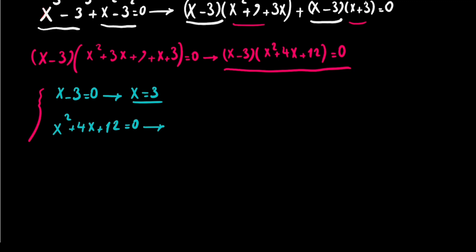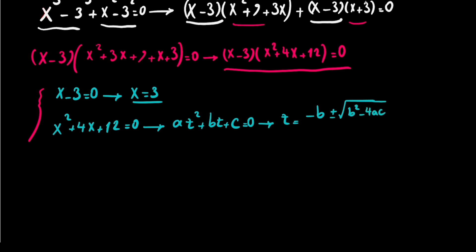To solve the quadratic x squared plus 4x plus 12 equals 0, I'll use the quadratic formula. As I showed in a previous video, for at squared plus bt plus c equals 0, t equals (minus b ± √(b² minus 4ac)) / 2a. The link is in the description. Here a equals 1, b equals 4, and c equals 12.